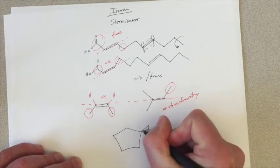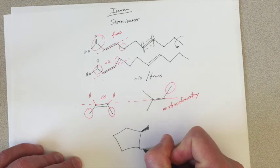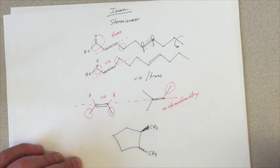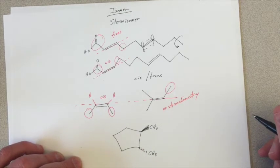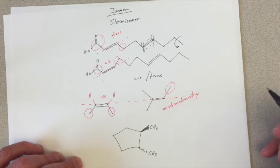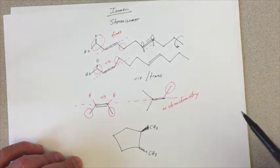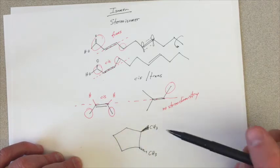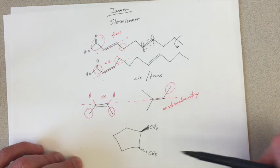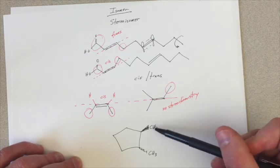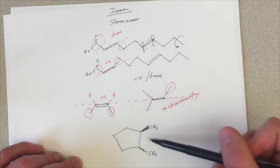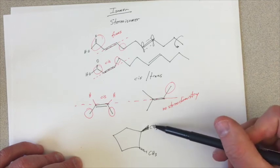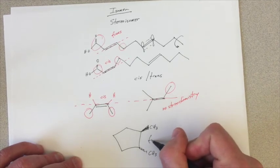And so if you have substituents on a ring, we can use wedges and dashes if we'd like to describe the orientation of these substituents relative to each other in three-dimensional space. And in this case, instead of drawing a line through a double bond, I really think of the ring as the plane, which I'm using to determine the relative positions of these substituents. This methyl group is pointing up above the plane of the ring. This one is pointing down below the plane of the ring. They're on opposite sides of the ring. So this would be a trans molecule.